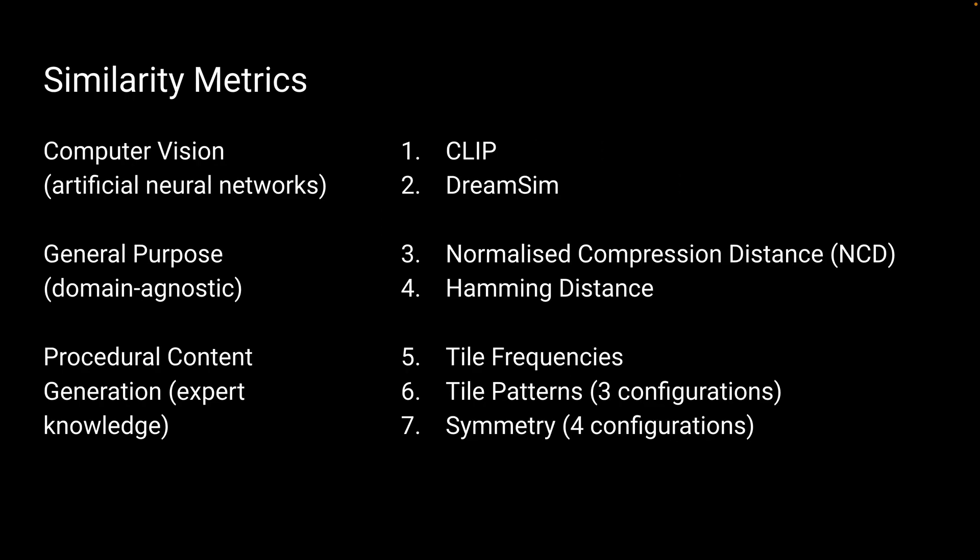We select seven similarity metrics with a total of 12 configurations, separated into three groups. Computer vision metrics like CLIP and DreamSim, based on artificial neural networks. General purpose metrics like normalized compression distance and hamming distance, which are domain agnostic. And then metrics from the procedural content generation literature: tile frequencies, tile patterns, and symmetry. These are based on expert knowledge.